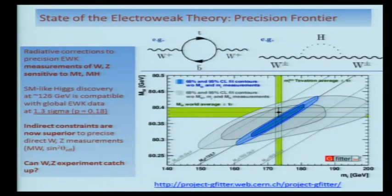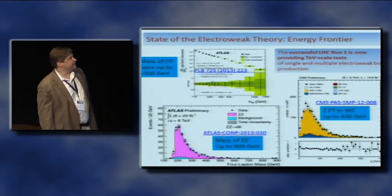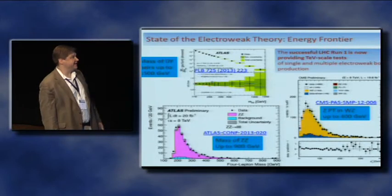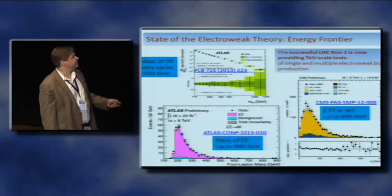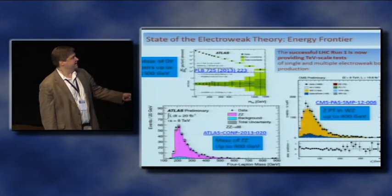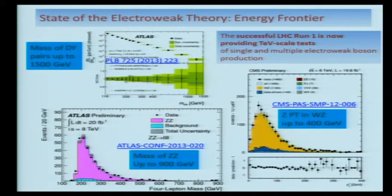The question is, can the W and Z experiments catch up with the indirect constraints? Alternatively, at the energy frontier, the Run-1 dataset from the LHC is now providing us TeV-scale tests of single and multiple electroweak boson production. ATLAS can observe dilepton pairs with masses up to 1,500 GeV, or Z-boson pairs up to 900 GeV, and similarly, very high-momentum WZ production in tri-lepton events at CMS. As we approach the TeV scale, we can directly test whether the Higgs plays an exclusive role in electroweak symmetry breaking.